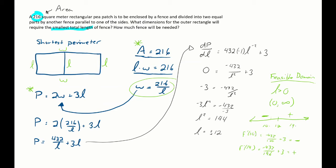And that's my only critical number. I don't have endpoints to check. Therefore, the minimum perimeter I can get while still having 216 square meters leads me with letting a length be 12, which would mean the width is equal to 216 divided by 12. That would give us 18. So my width is 18, and it also asks how much fence will be needed, so the perimeter is equal to 2 times 18 plus 3 times 12, which would be 36 plus 36, or 72 meters of fence.